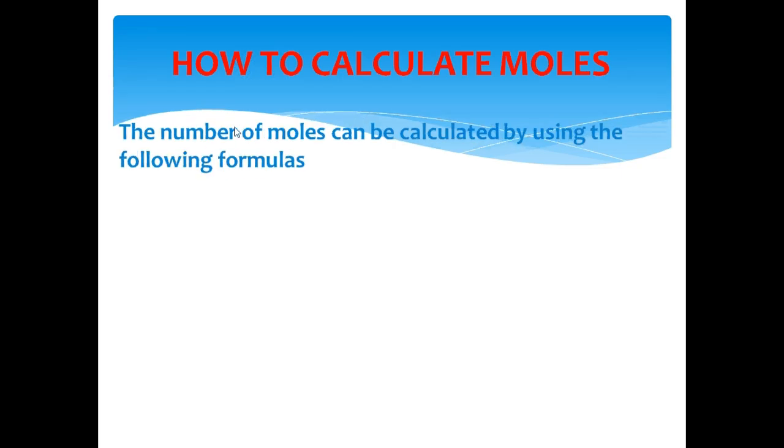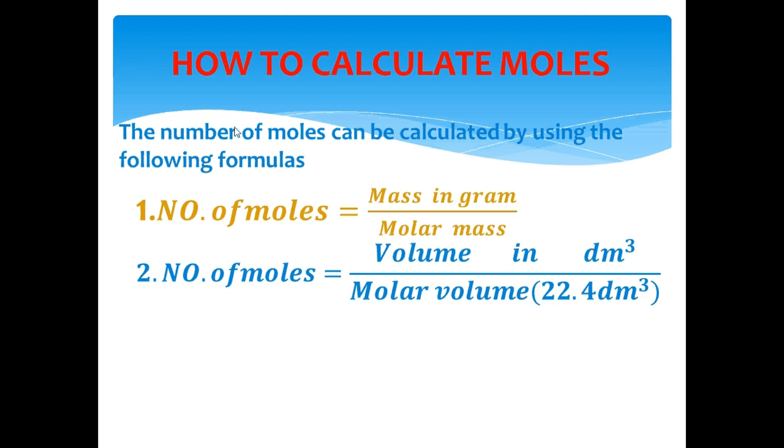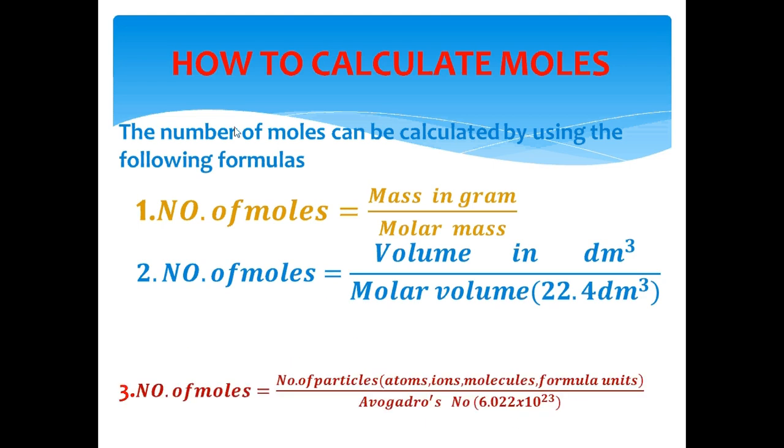Now we are going to learn how to calculate moles. The following formulas can be used to determine the number of moles: Number one, number of moles equals mass in gram divided by molar mass. Number two, number of moles equals volume in dm³ divided by molar volume (22.4 dm³). Number three, number of moles equals number of particles divided by Avogadro's number (6.022 × 10²³).